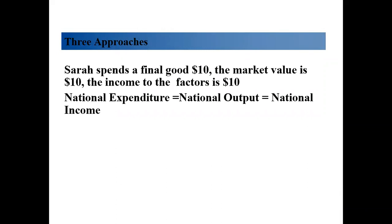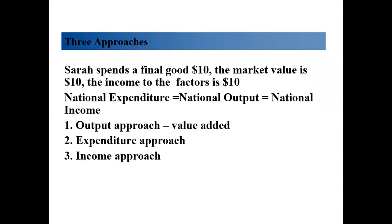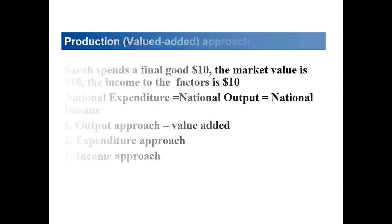So what are the three approaches we're going to explain? They are national expenditure, national output, and national income. If a person named Sara spends $10 on final goods, the market value is $10, and the income to the factors of production is $10. We will look at the output approach (value added), then the expenditure approach and income approach.